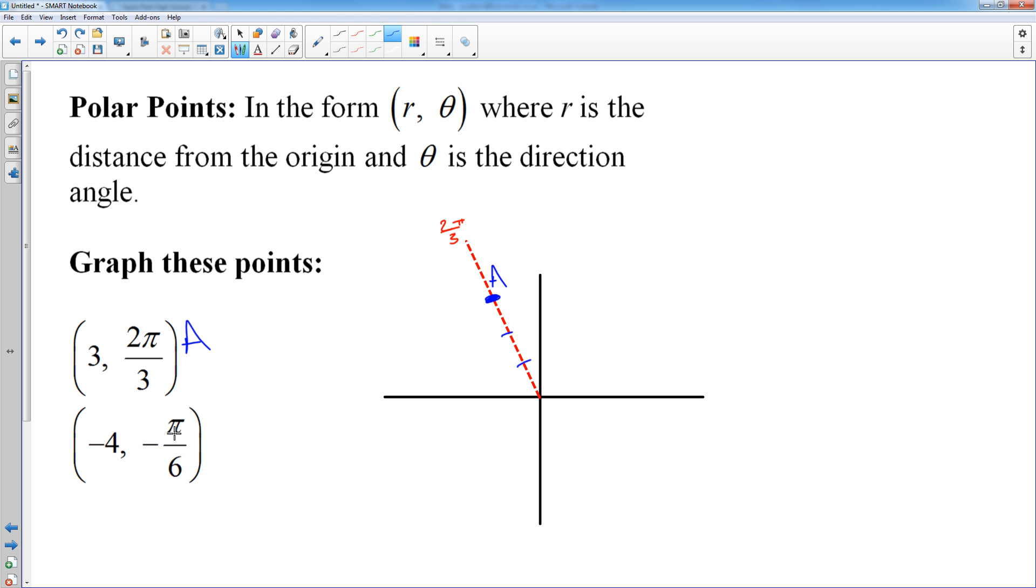Negative 4, negative π over 6, again you start by finding the angle. Negative π over 6, positive π over 6 is up here, which means negative π over 6 is going to be extending backwards 30 degrees. So there's negative π over 6.